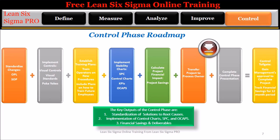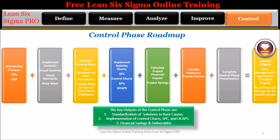Step 7: Complete the control phase presentation. Step 8: Control tollgate — gain management's approval to complete the project. The project leader along with the process owner are responsible for tracking the financials from this project for the next 12 months. The key outputs of the control phase are: 1. Standardization of solutions to root causes, 2. Implementation of control charts, SPC, and OCAPs, and 3. Financial savings and project deliverables.